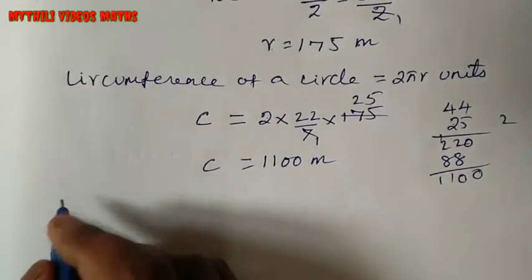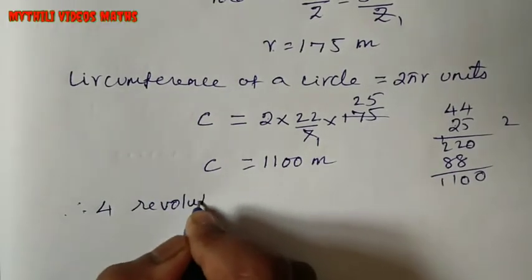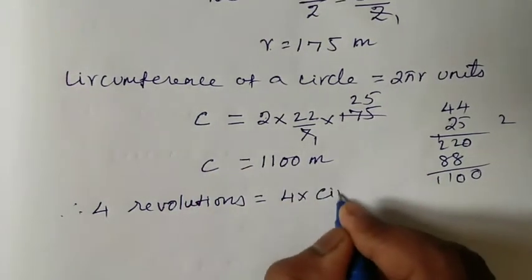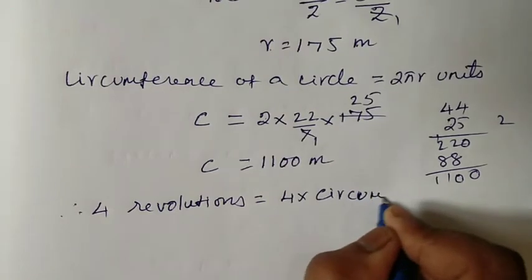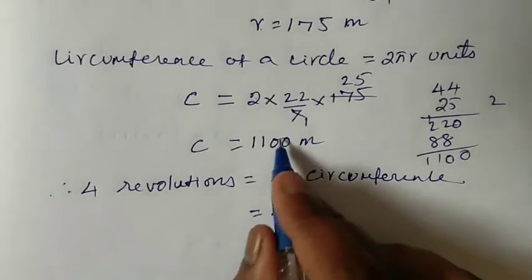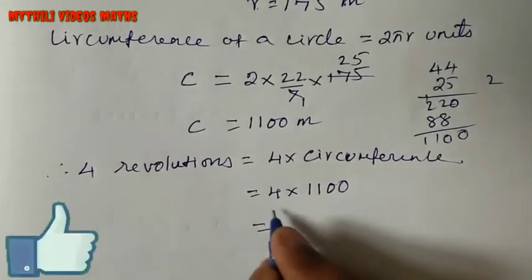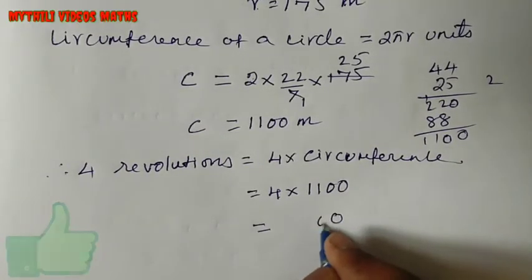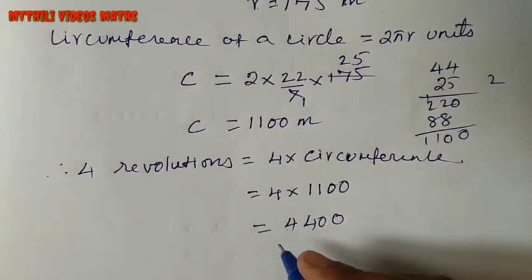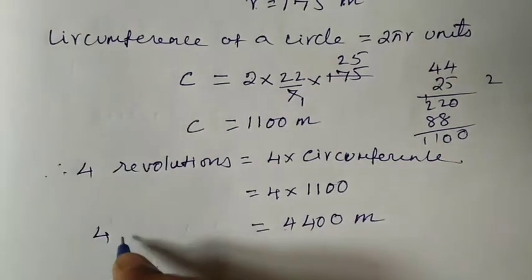Now for 4 revolutions. Distance covered is equal to number of revolutions multiplied by circumference. That is 4 into 1100. Multiply: 4 times 0 is 0, 4 times 0 is 0, 4 times 1 is 4, 4 times 1 is 4. So the answer is 4400. Distance covered by the athlete in 4 revolutions is equal to 4400 metres.